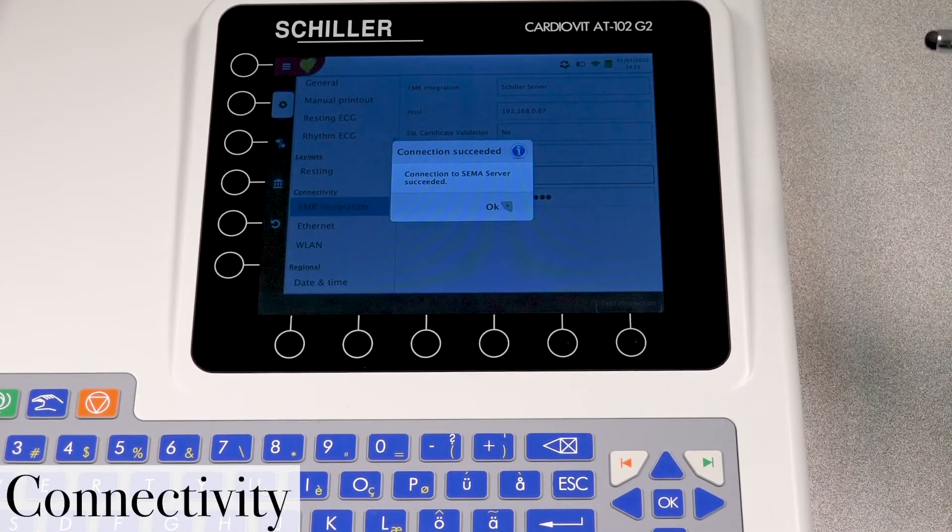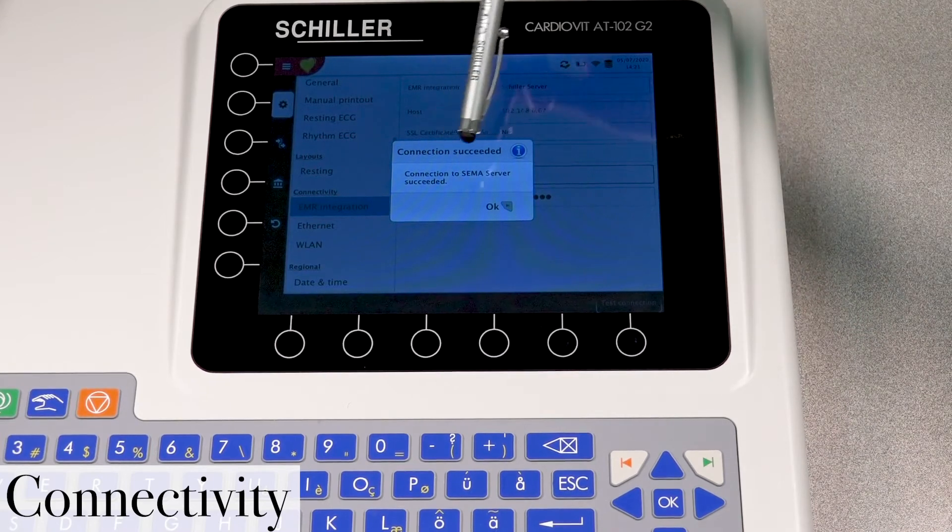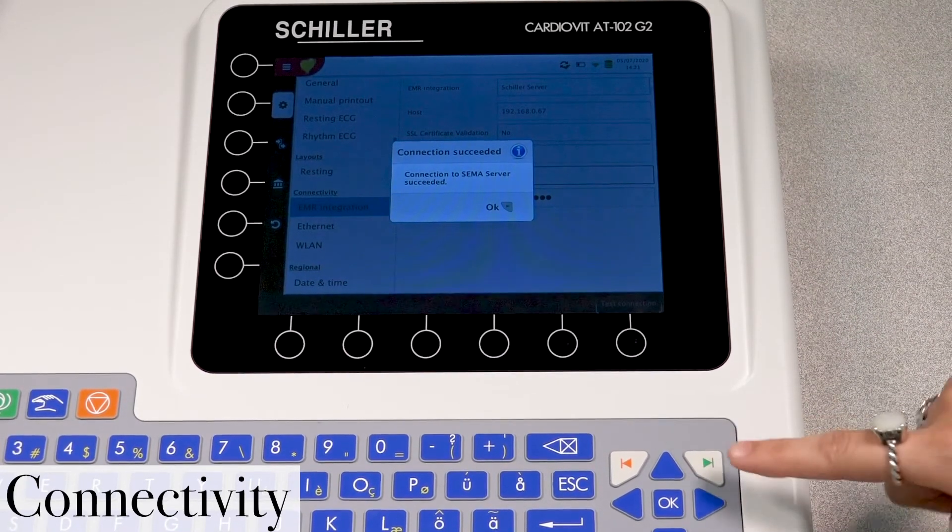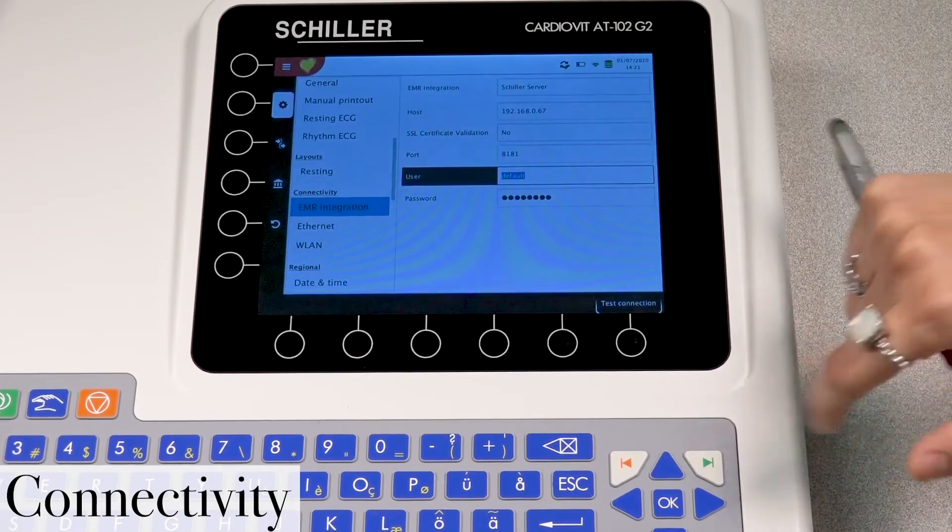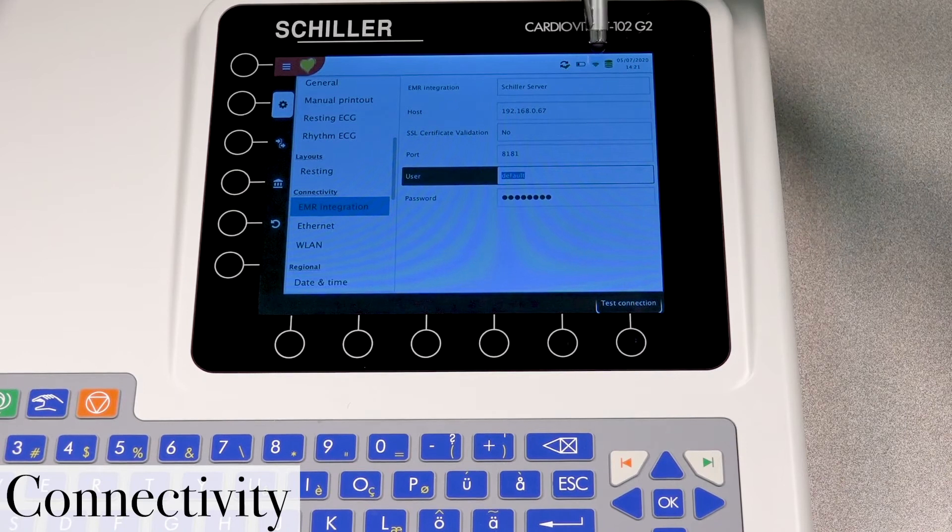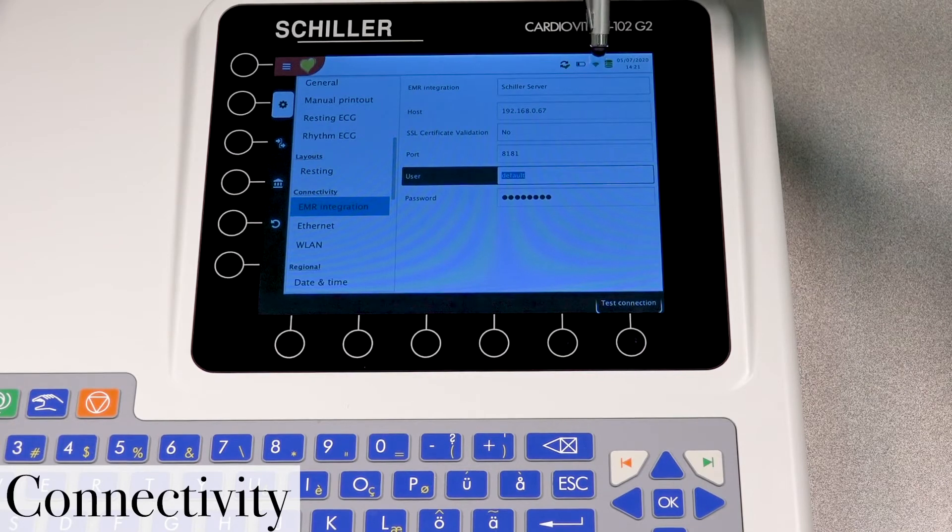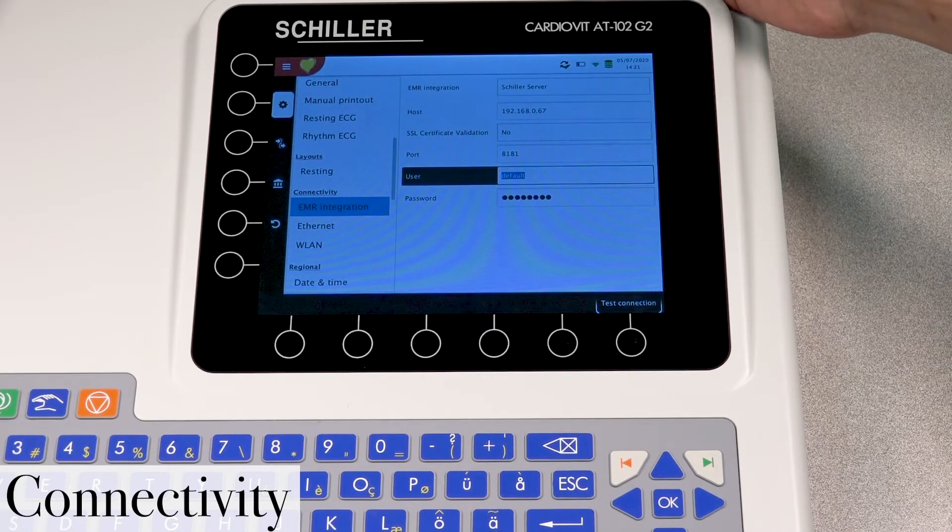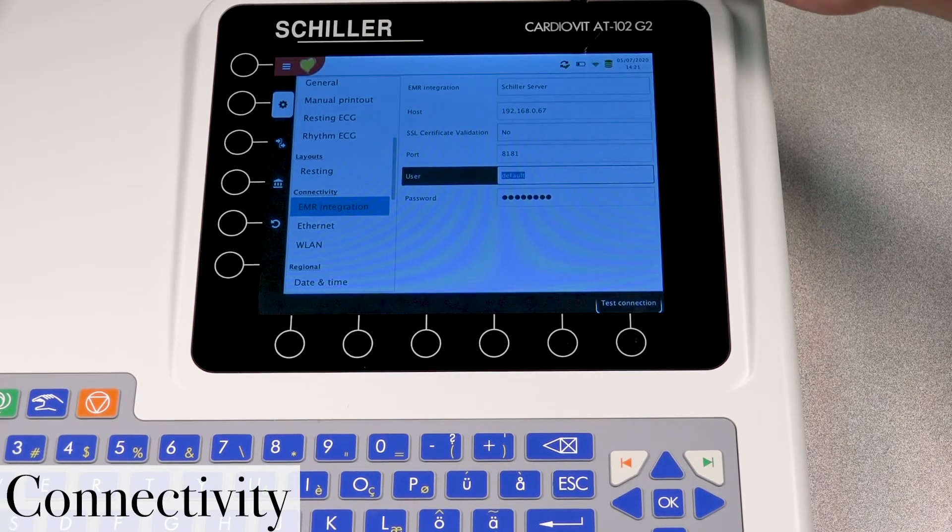And then you would get a message indicating that you have successfully connected to the server. We're going to go ahead and press OK by pressing this green button here. And if you notice now your black Wi-Fi icon has now converted from black to green. And when you have a green Wi-Fi icon, that indicates that you are now connected to both Wi-Fi network and the server.